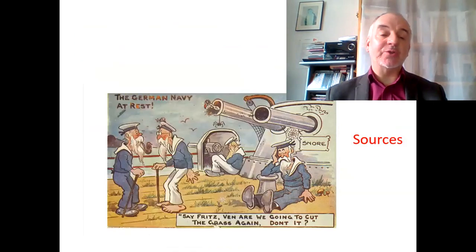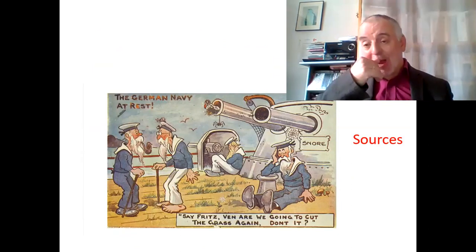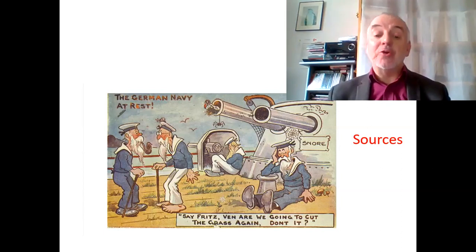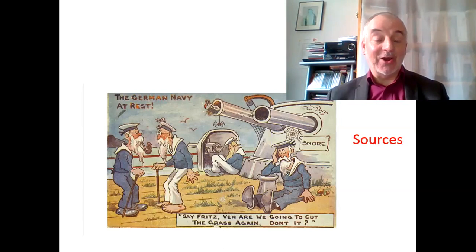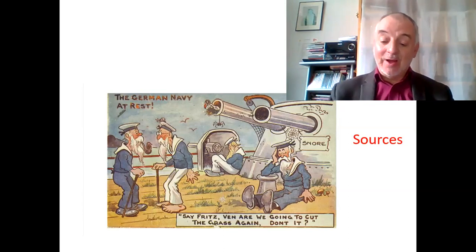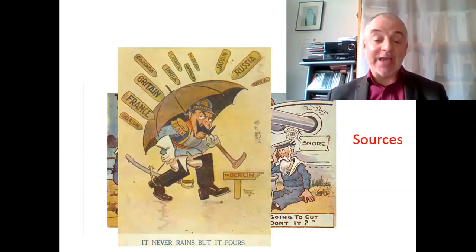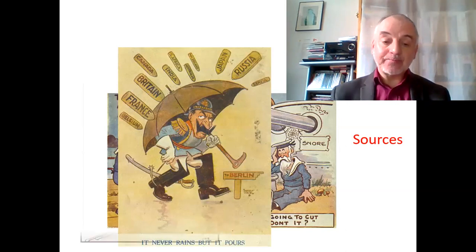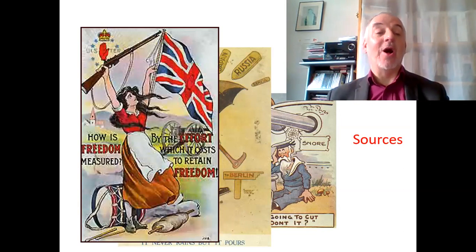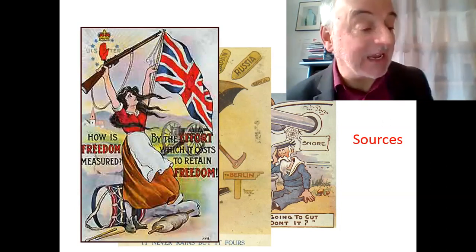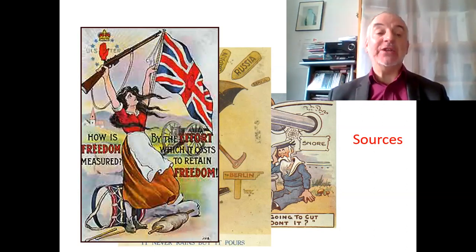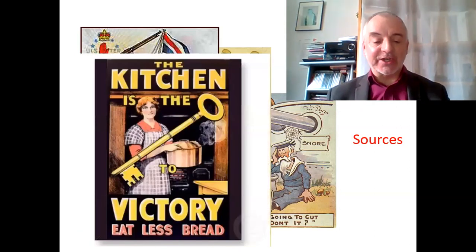Now here we have a series of images which might at first seem comparable to the posters, but they're not really — these are postcards. One mocks the German navy, showing them as terribly lazy and old. Another shows the Kaiser in a difficult situation. One shows Ulster regiments supporting the British Empire with the slogan 'How is freedom measured by the effort which it costs to retain freedom.' And finally: 'The kitchen is the key to victory — eat less bread.'